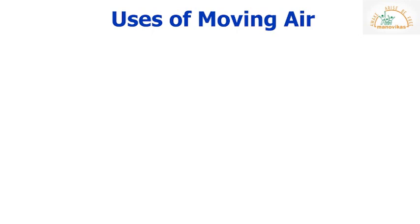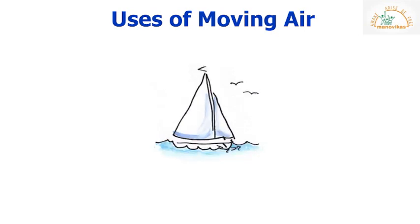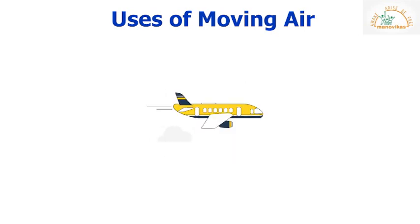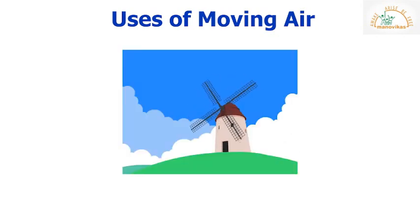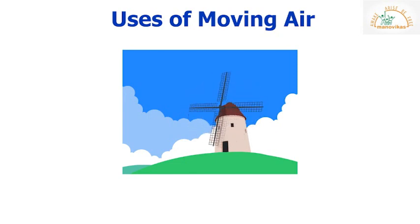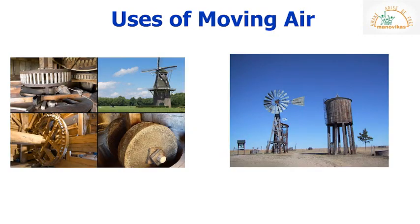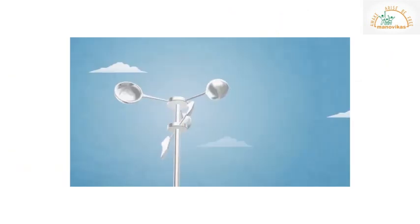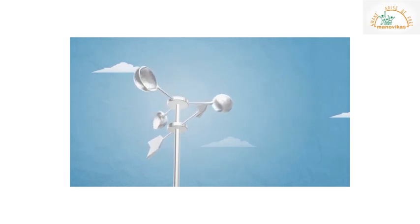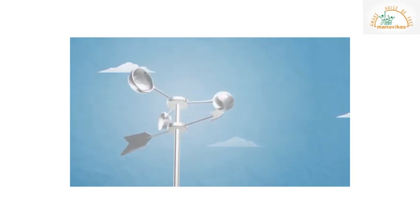Moving air or wind has many uses. Wind helps a sailboat to sail on water. Wind helps an aeroplane to fly. The blades of a windmill move with the help of wind; windmills are used to grind grains and draw water from wells. A wind vane or weather vane tells us the direction of wind.